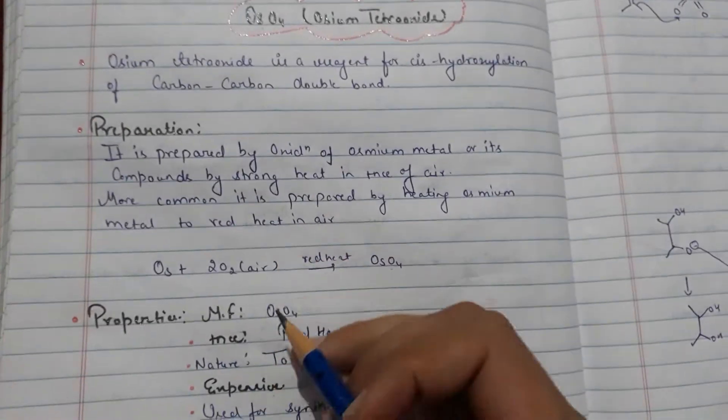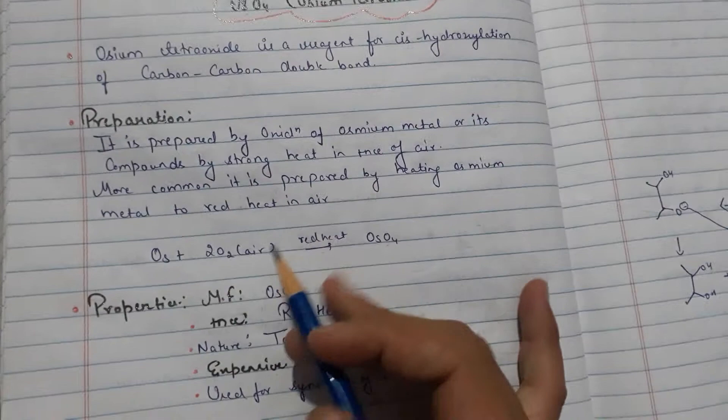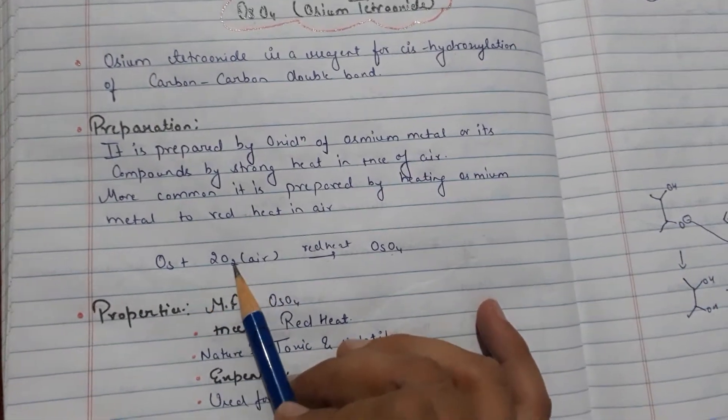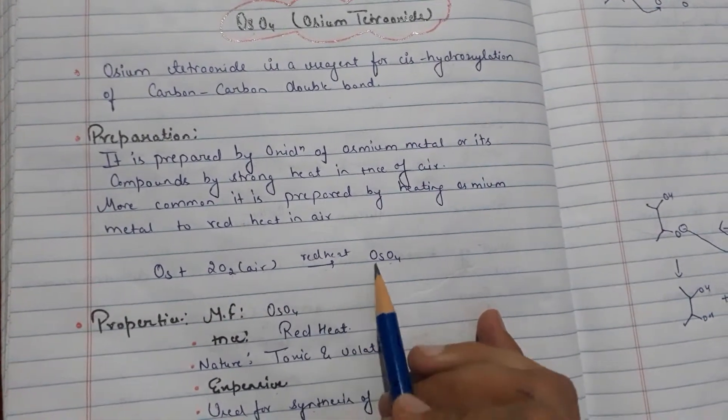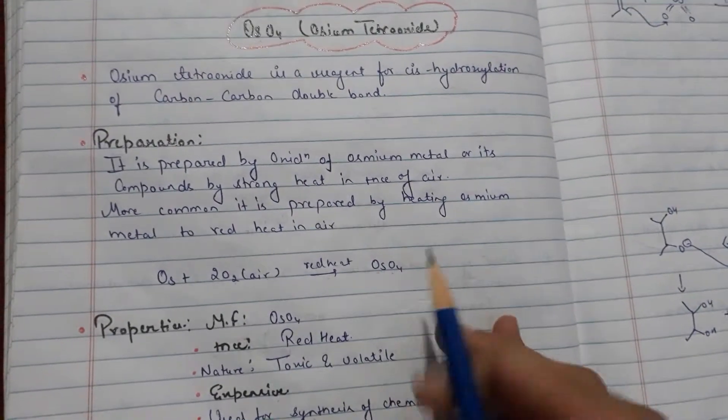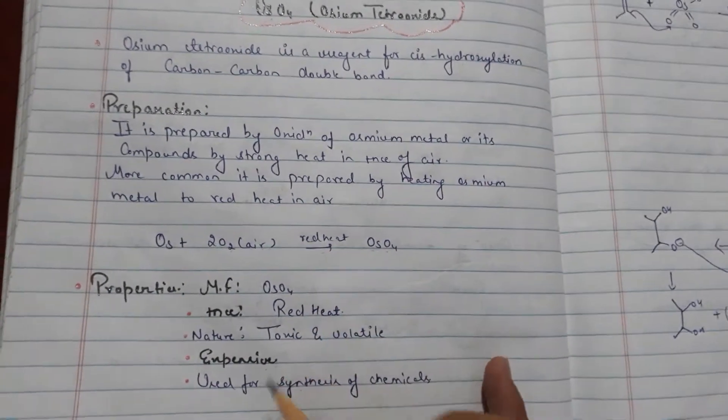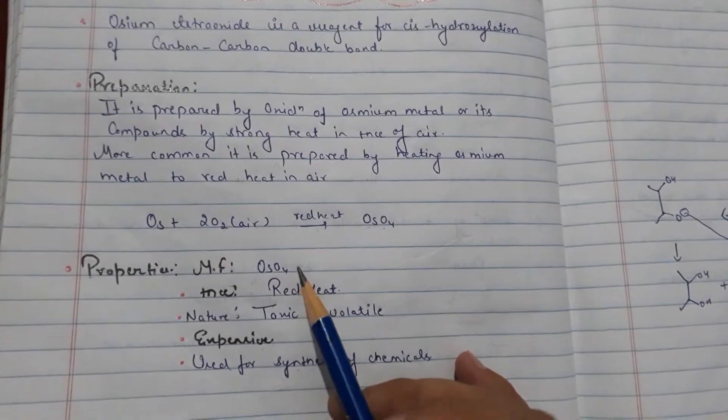First, preparation of Osmium Tetraoxide. Osmium plus 2 O2 in air and presence of red heat will form Osmium Tetraoxide. Now some properties of Osmium Tetraoxide.